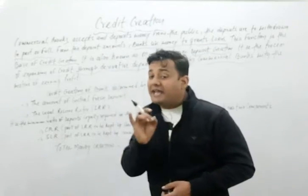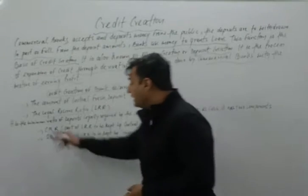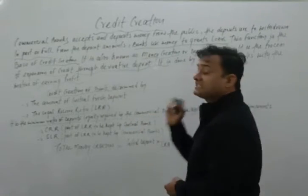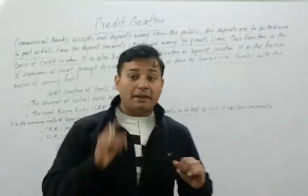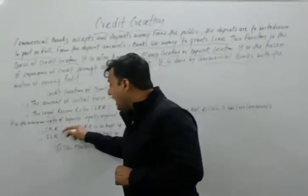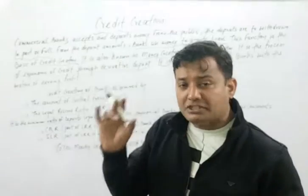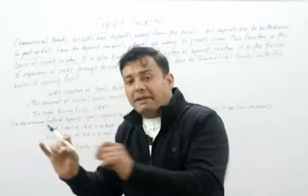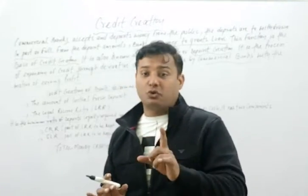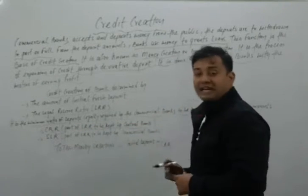The second determinant is the Legal Reserve Ratio, or LRR. Commercial banks must keep a legal reserve ratio. It is the minimum ratio of deposits legally required by the commercial banks to be kept as cash. It has two components: the first is CRR — Cash Reserve Ratio. Commercial banks must give a part of their money to the central bank in the form of security.